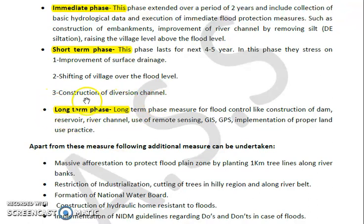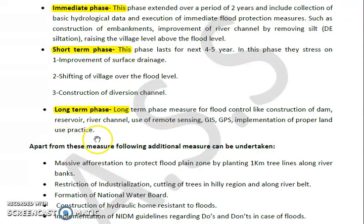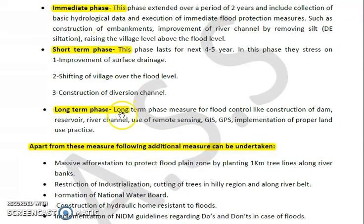The long-term phase included measures such as construction of dams and reservoirs, improvement of river channels, and use of remote sensing, GIS (Geographical Information System), GPS (Geographical Positioning System), and implementation of proper land use practices for mitigation of floods.